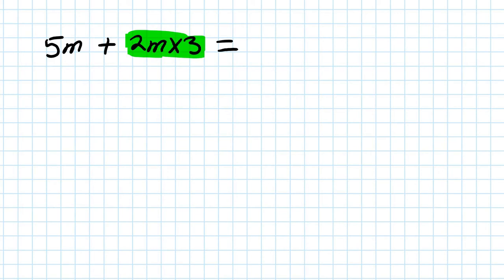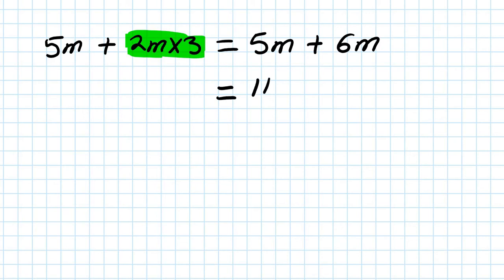So your answer is 5m plus 6m. Now you can simplify by collecting like terms. So 5 plus 6 is 11, so you've got 11m.